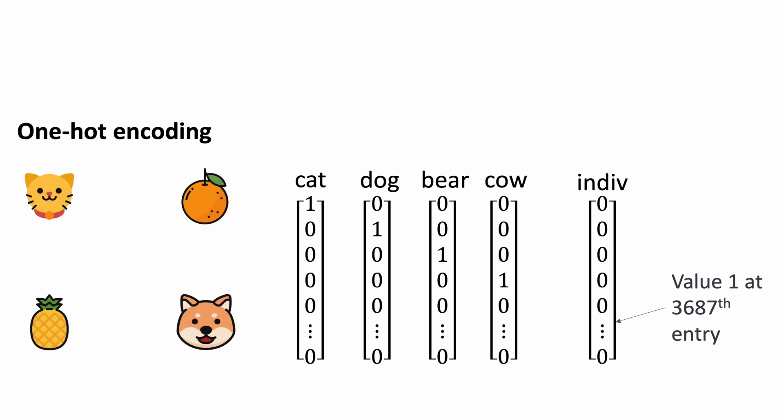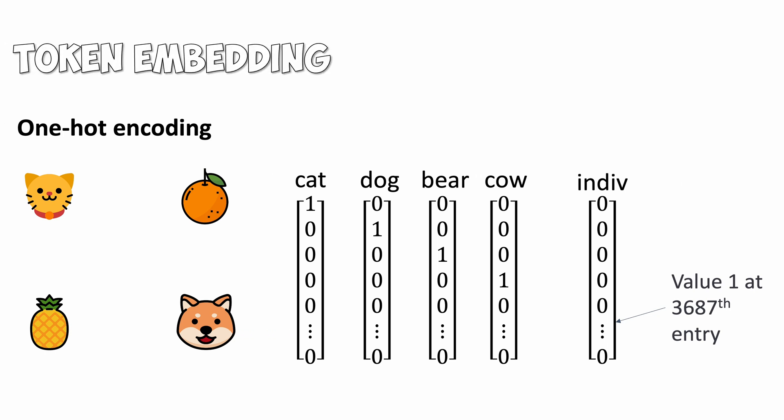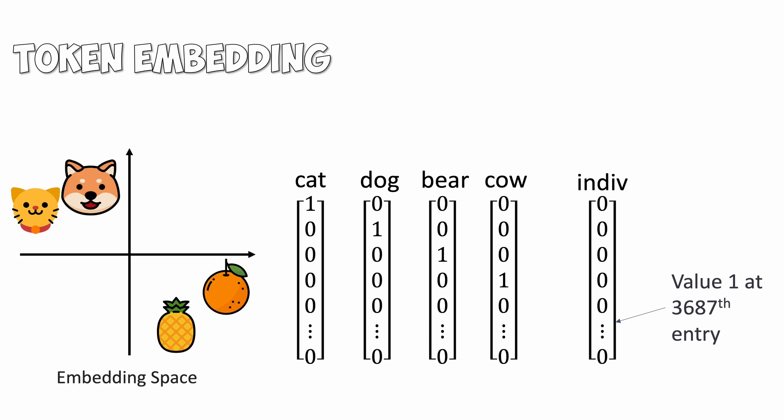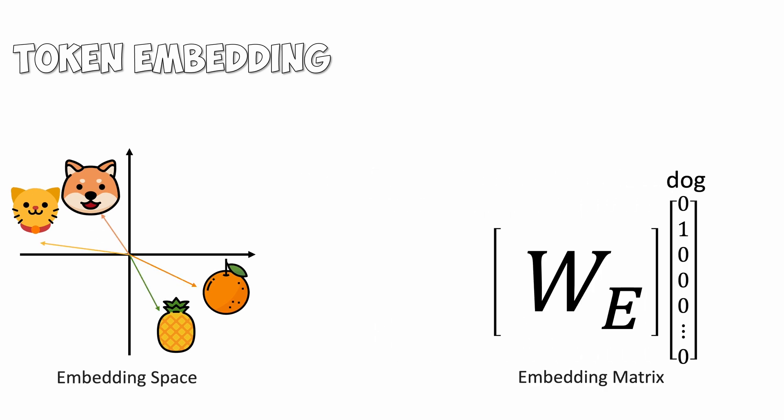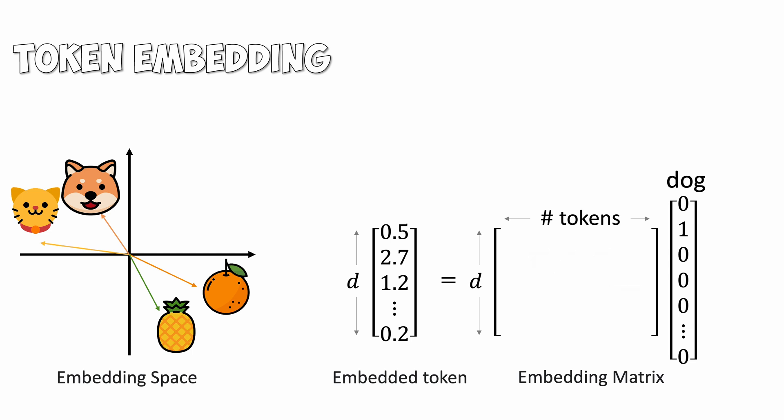This vector representation is nice, but it does not encode any semantic meanings of words. It would be great to arrange these tokens as vectors in a space where semantically similar tokens are close to each other. This is the idea of token embedding. We can achieve this by learning an embedding matrix. This embedding matrix maps a one-hot vector to a d-dimensional vector. Effectively, this matrix is a lookup table where each token's embedding is stored as a column vector.